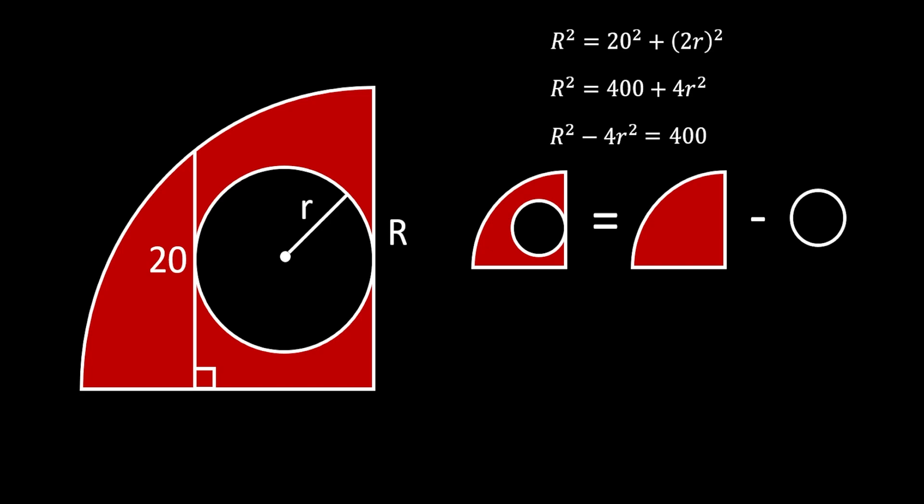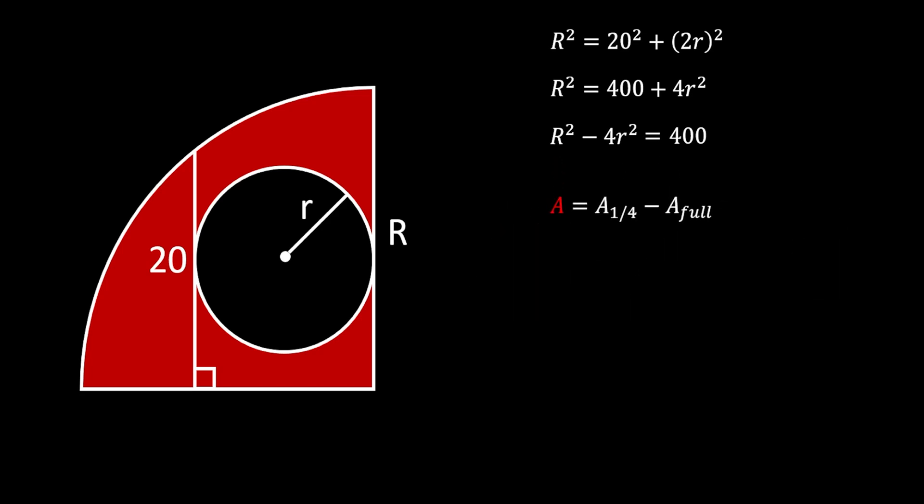So if we put this into formula we will get the following. Now the area of the quarter circle must be equal to one fourth of the big R squared pi and the area of this circle will be equal to small r squared pi. If we substitute these values in our previous equation we will get that shaded area is equal to one fourth of the big R squared pi minus small r squared pi.